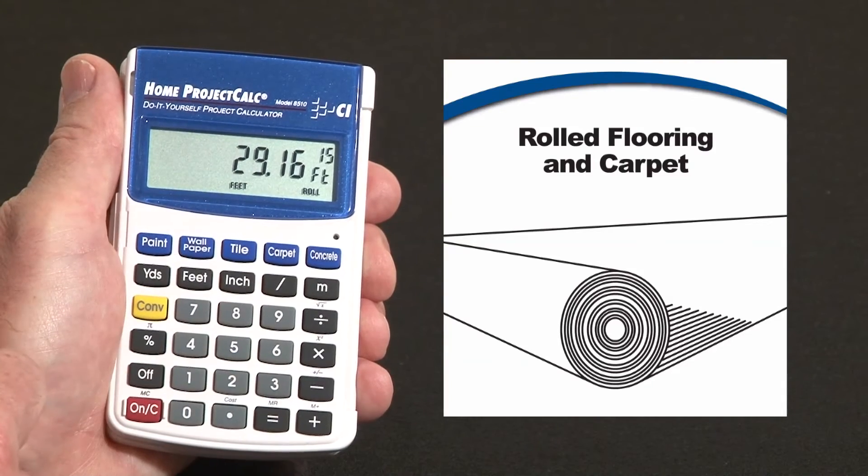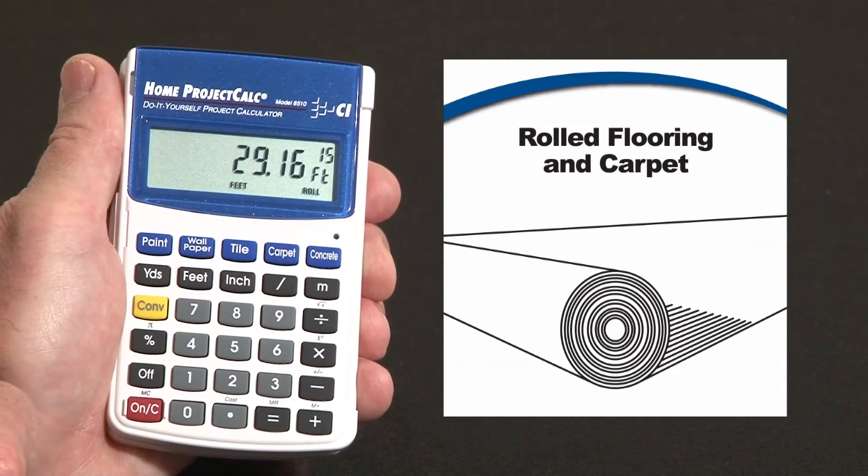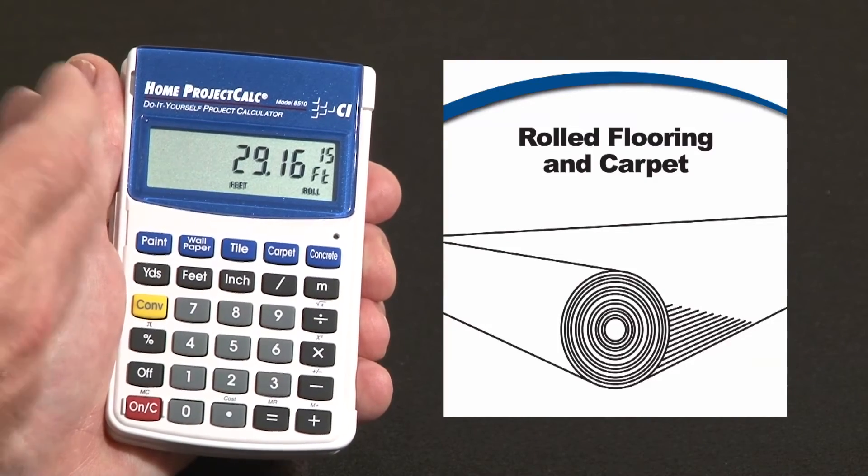Now let's say that the 15-foot wide roll fits my room the best without any seams or cuts, and that this goes for $18.65 per lineal foot.